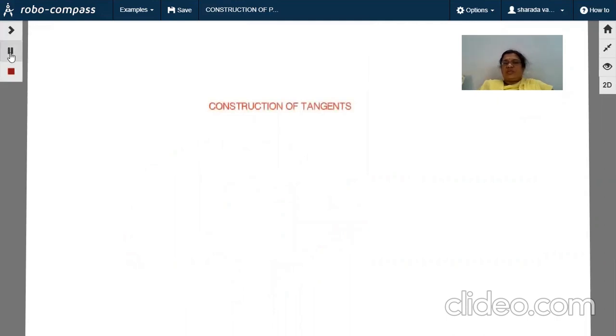Construction of a pair of tangents to the circle is a very important construction which comes in SSE, that is secants and tangents to the circle. I'll show you how to construct the pair of tangents to the circle.